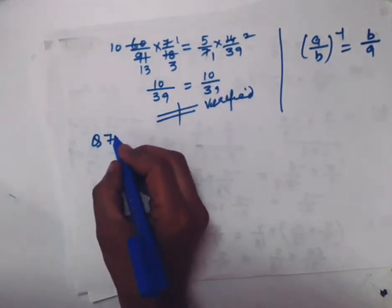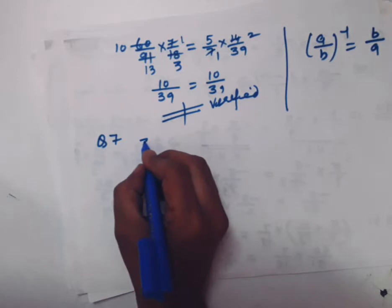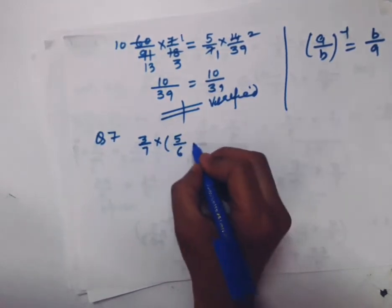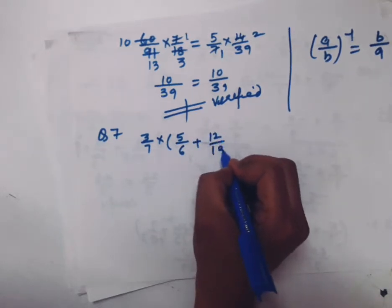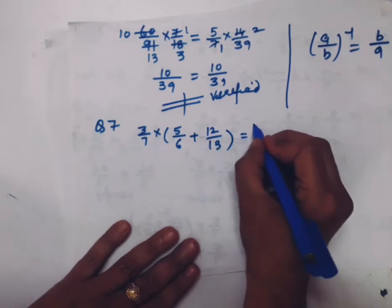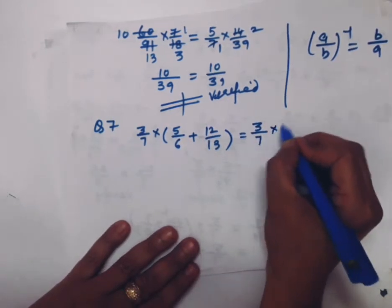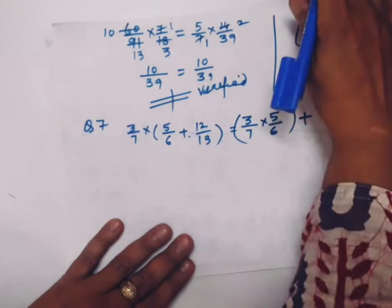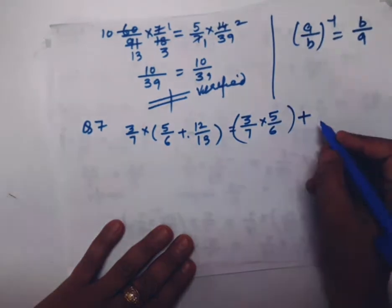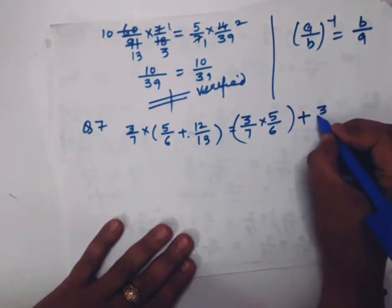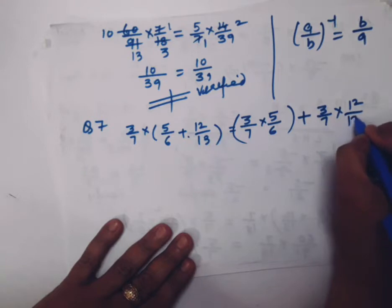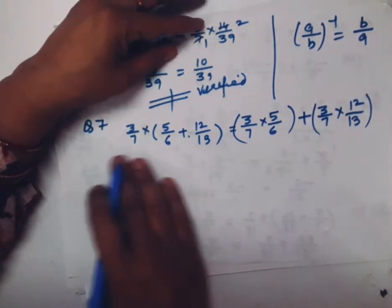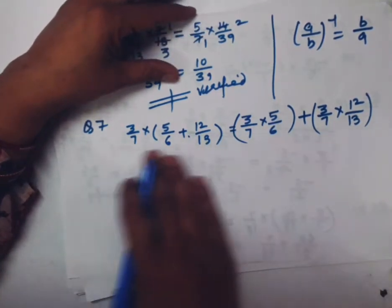Question number 7. 3/7 × (5/6 + 12/13). You have to show whether this equals... Even if I don't see the question, I know the property that first 3/7 will multiply with 5/6, then plus sign is there, I have put plus sign. After writing plus sign, 3/7 will multiply with what? 12/13.